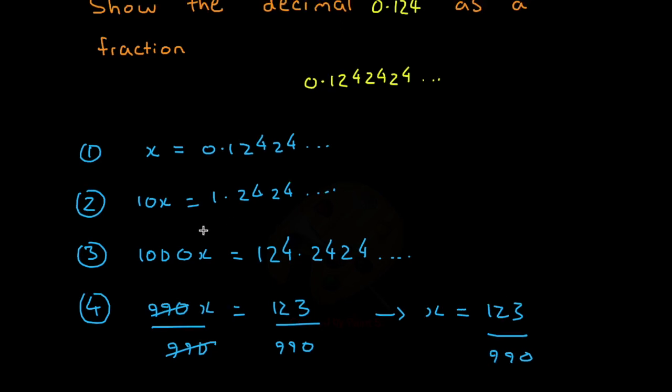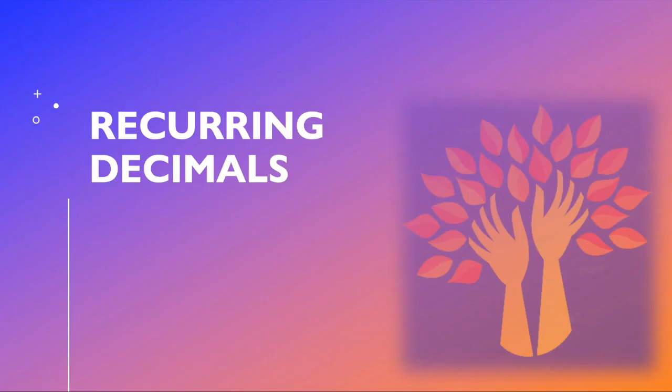So, as you can see, we had to add an extra step in here. Multiply this by 10, as well as 1000, so that we can get the same digits on the right side of the decimal point. And that's pretty much it. Remember, you have to get the same digits on the right side of the decimal point, so that you can subtract and therefore get a whole number to put in your fraction.